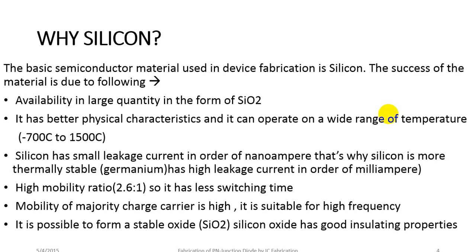Germanium has a high leakage current in the order of milliamperes. Silicon has a high mobility ratio of 2.6 to 1, giving it less switching time. The mobility of the major charge carrier is very high, making it suitable for high frequency applications. It is also possible to form a stable silicon dioxide, which has good insulating properties.